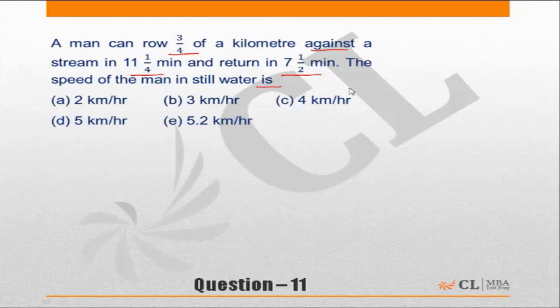All of us know that the downstream speed plus upstream speed divided by 2 will give us the speed of the boat or the man in still water, and downstream speed minus upstream speed divided by 2 will give us the speed of the current.